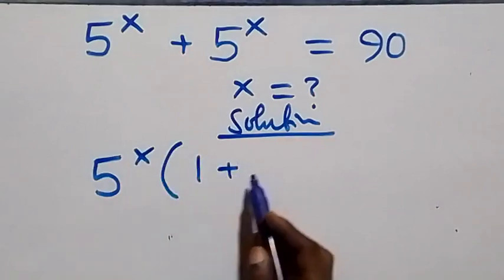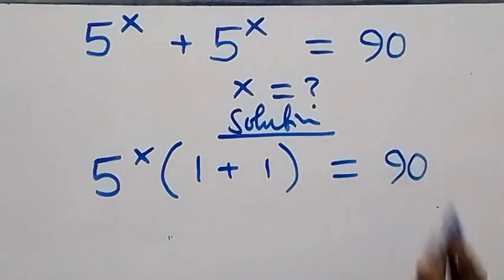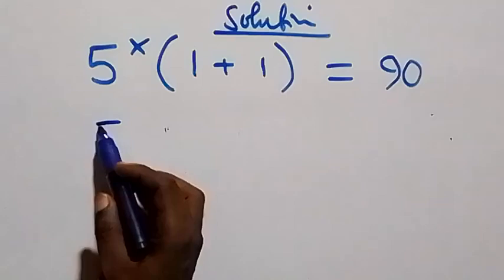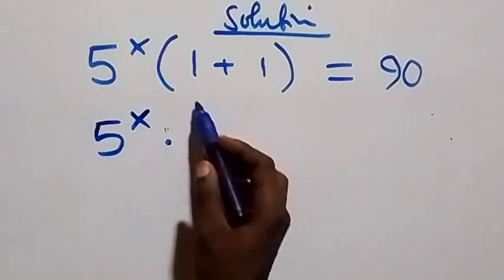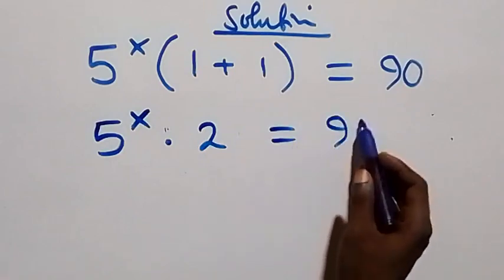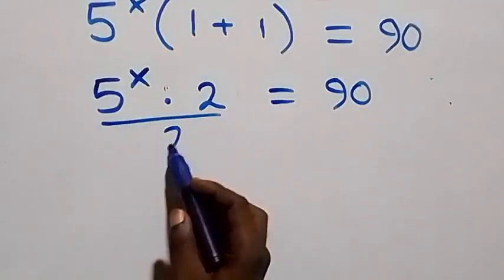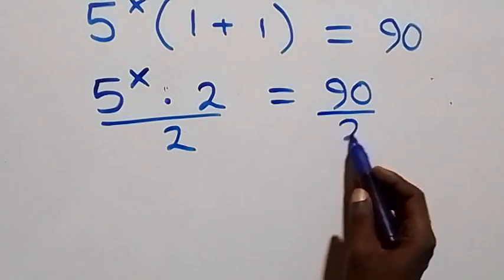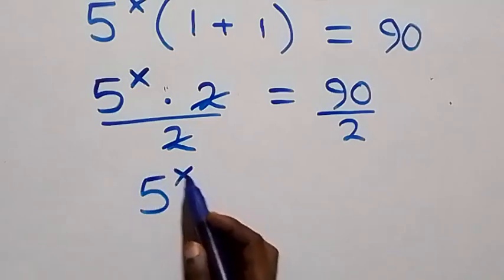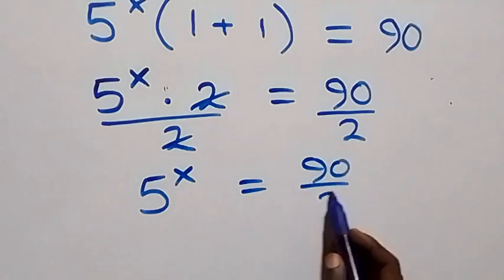1 plus 1, which is equal to 90 on this side. That is the same thing as 5 raised to power x times 2, equals 90. From here the next step we divide both sides by 2 — divide here by 2, also divide this side by 2 — and 2 cancels each other, so we have 5 raised to power x equals 90 over 2.